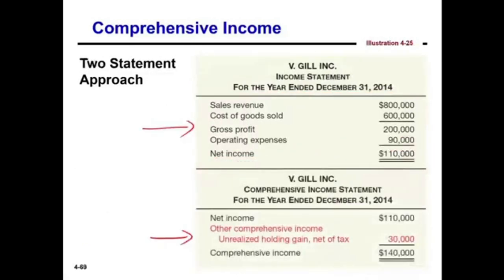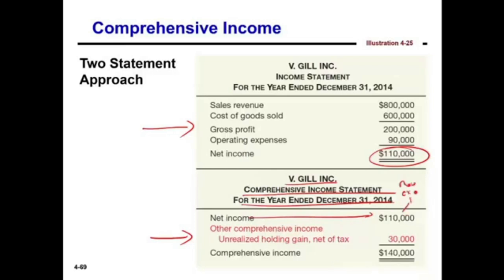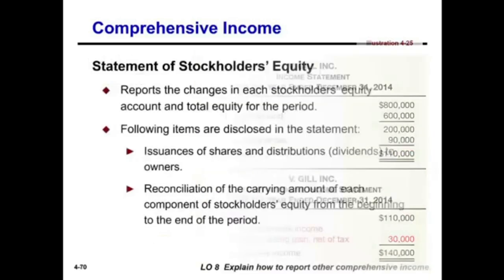Alternatively, we could have two statements. We prepare the income statement showing net income, then prepare a comprehensive income statement that starts with net income — because it includes revenues, expenses, gains, and losses — and then adds to it the other comprehensive income items, such as an unrealized holding gain.